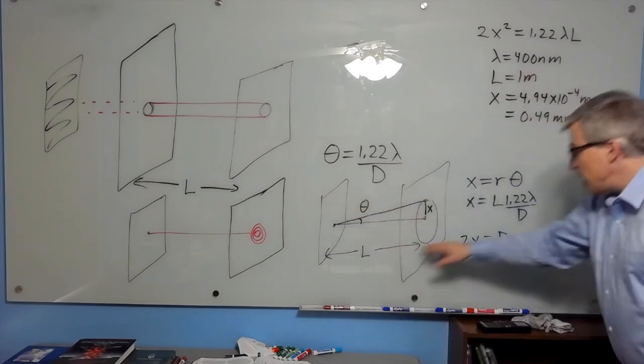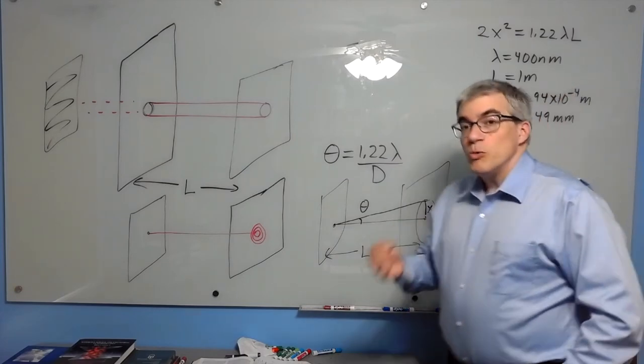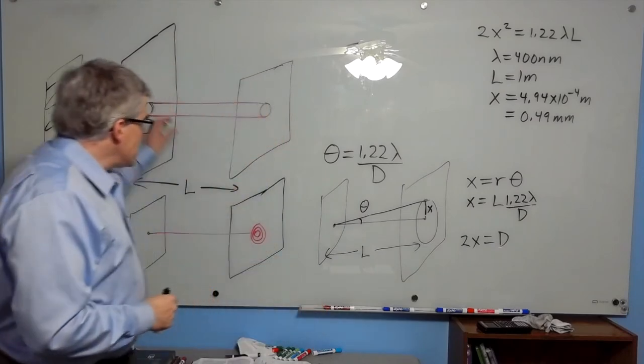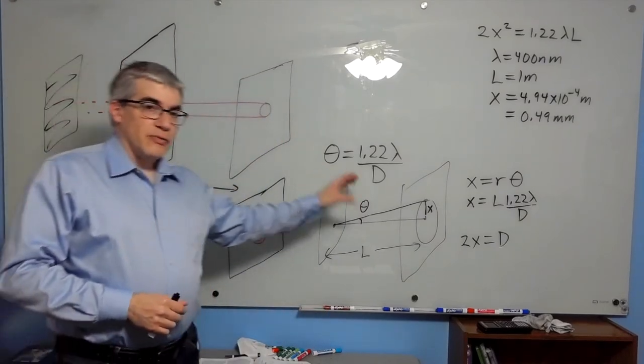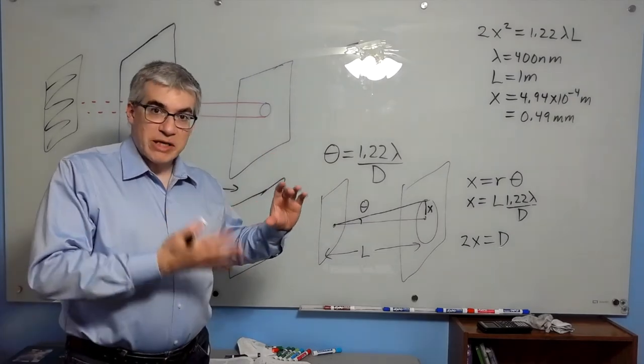If we call this distance L, then we can get x is L times 1.22 lambda over d. And so the question is, which is bigger? If the radius of the hole is bigger than the diffraction pattern, then the size of the hole dominates, and making a smaller hole would make a smaller pattern.